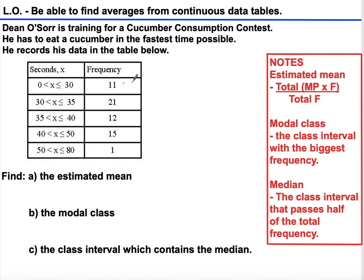The modal class is the class interval which contains the biggest frequency. The median is the class interval that passes half of the total frequency. Find the estimated mean, the modal class, and the class interval which contains the median. You can pause the video if you want to try this question, and then I'll give the solution.